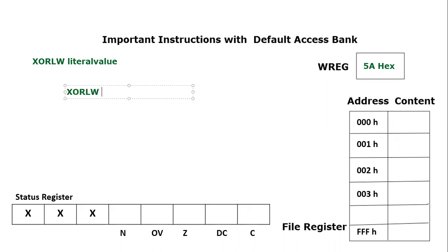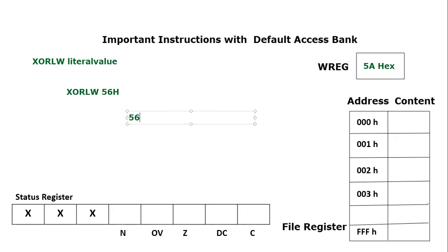So, XOR literal to working. Let's say we are taking a literal value of 0x56. What is going to happen between this literal value and the working register value? The working register value we have taken is 0x5A. An exclusive OR operation will be performed.